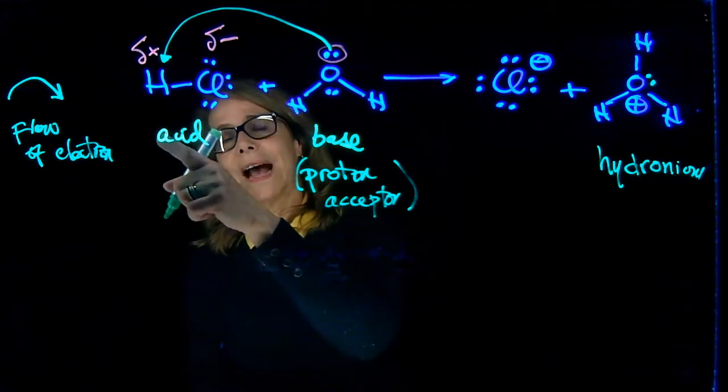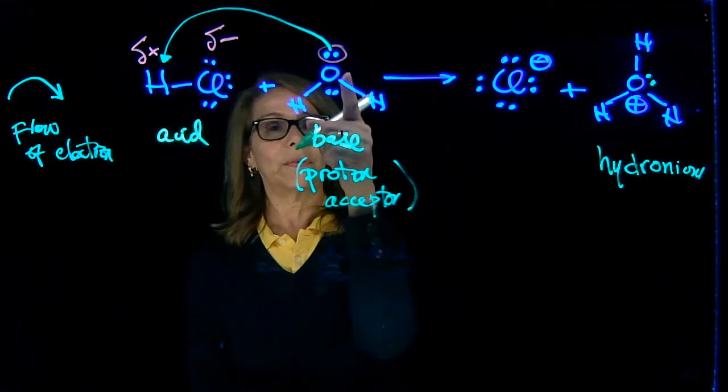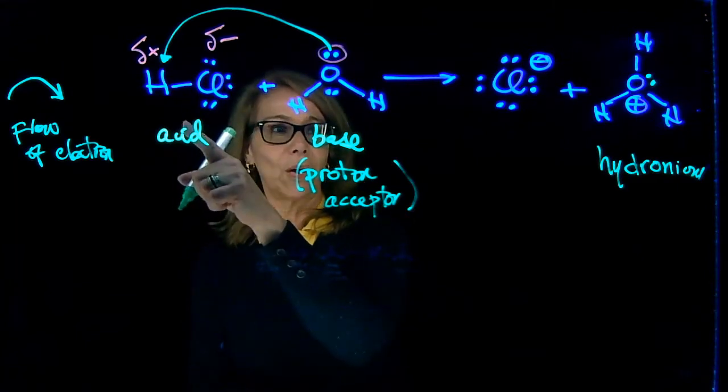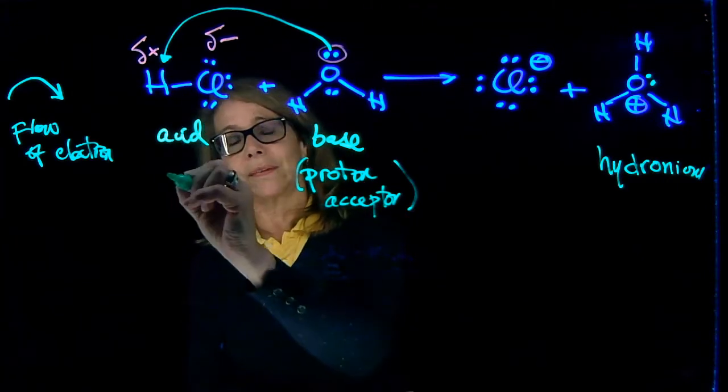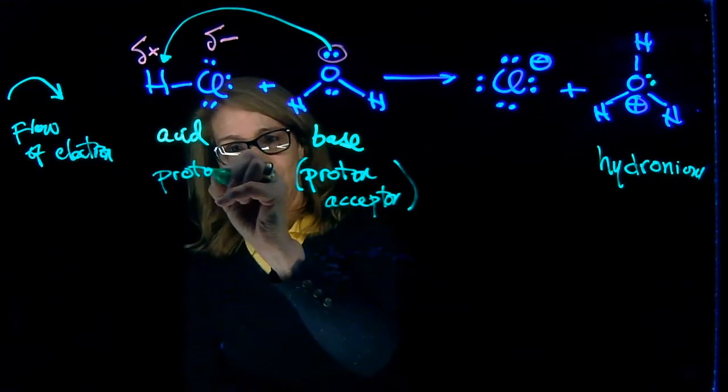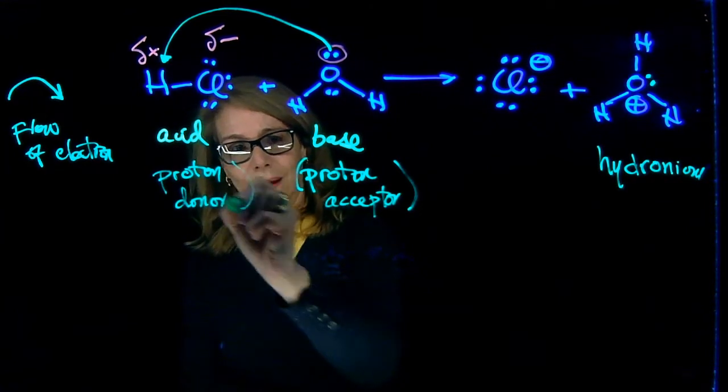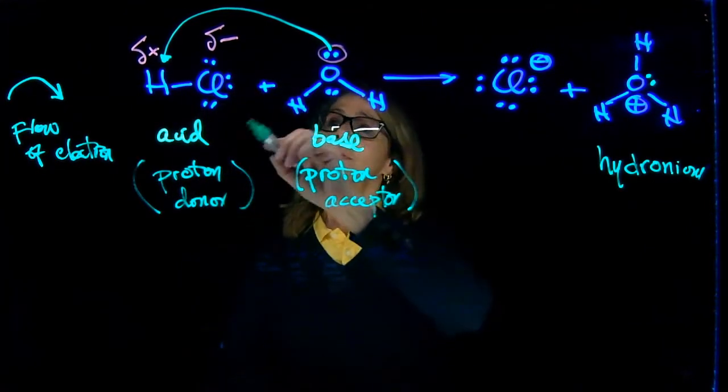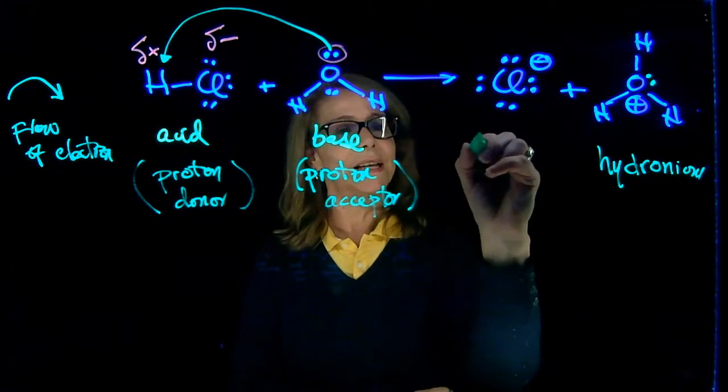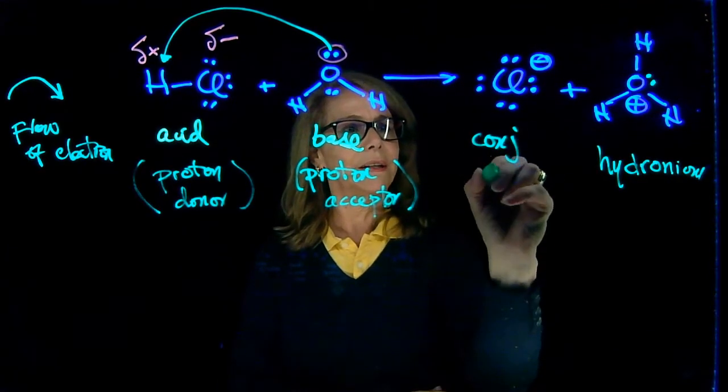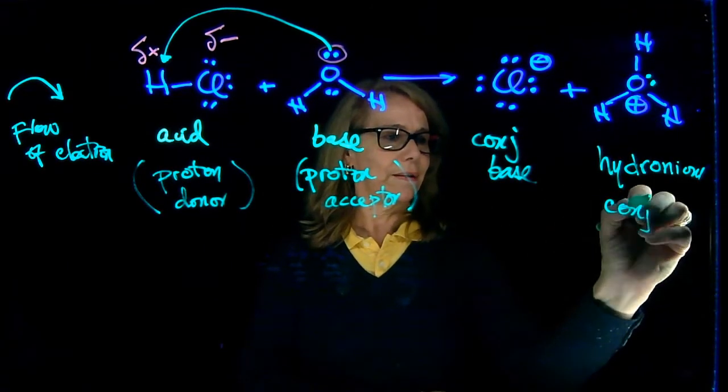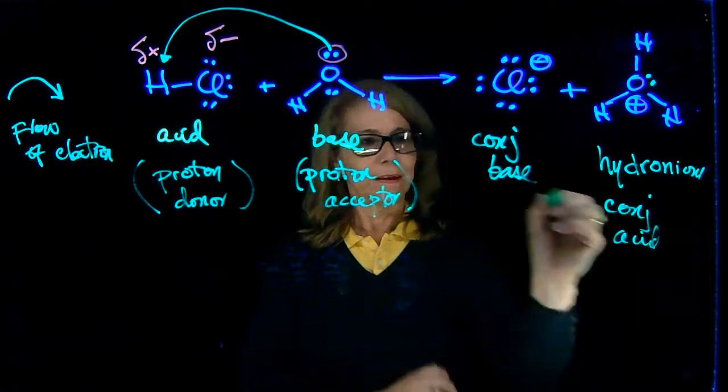The acid had donated a proton, so the base took it. We have the flow of electrons. And now in doing so it donated a proton. So concept: Bronsted-Lowry—the acid is a proton donor. And now donating the proton, it became this anion, and this is the conjugate base. And hydronium here is the conjugate acid. So we have pairs.